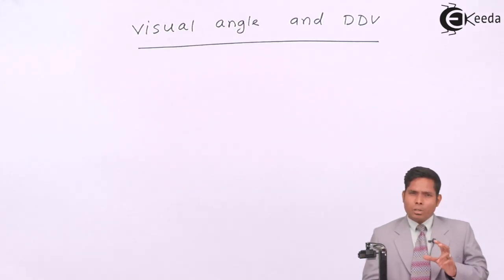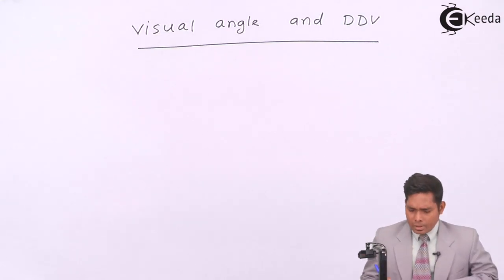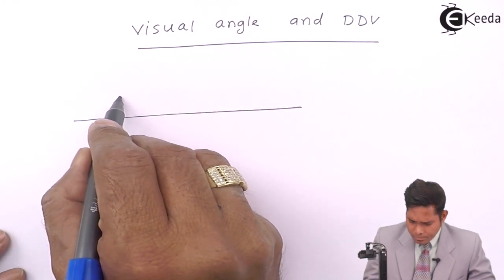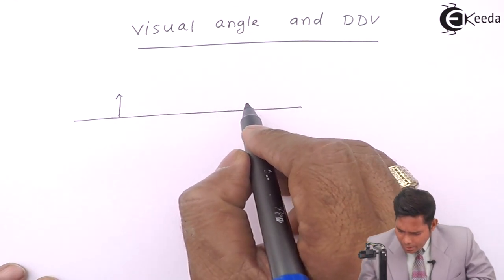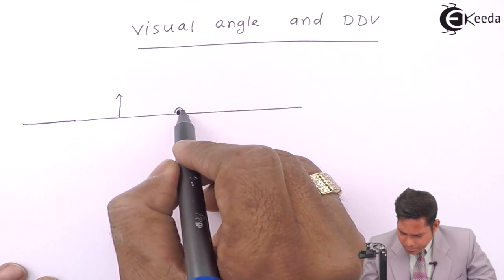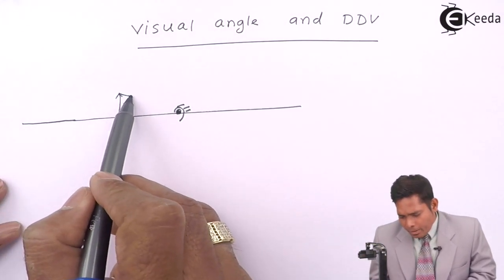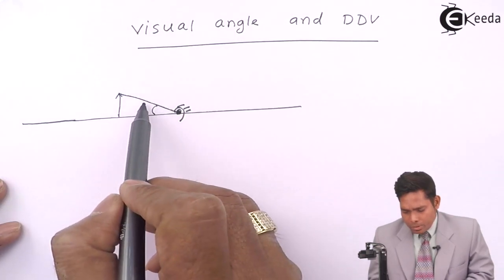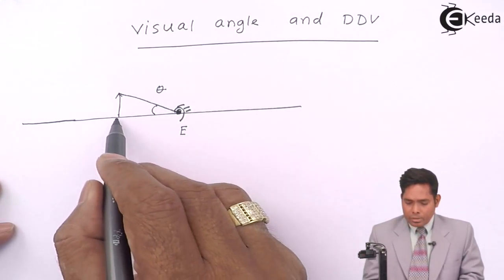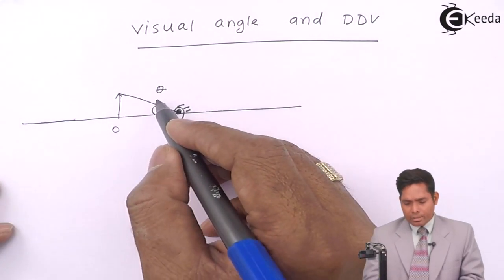Any object looks smaller or bigger depending on what angle it projects at the eye. Suppose I have an object here and my eye is over here. How much angle does it subtend at the eye? It subtends an angle — suppose this is theta at the eye. This is the object distance, this is my eye, this is the object, this is the size of the object, this is the object distance, and this is the angle subtended at the eye.